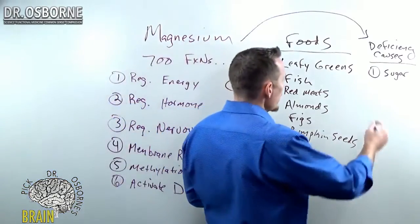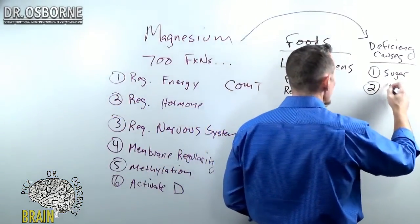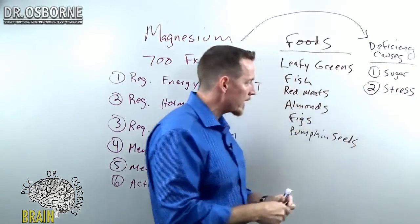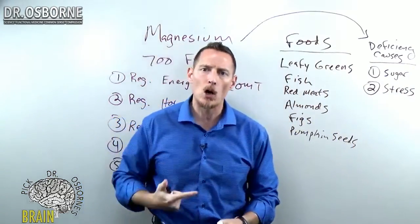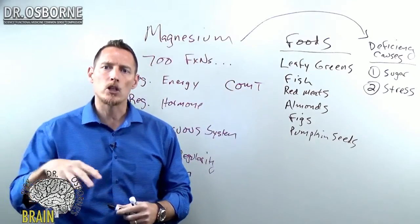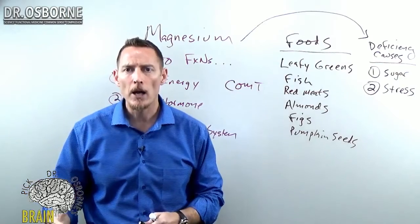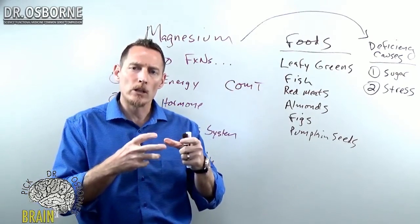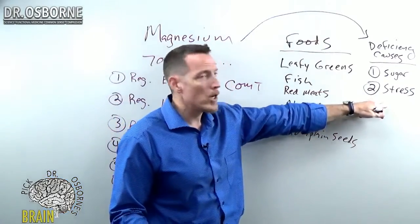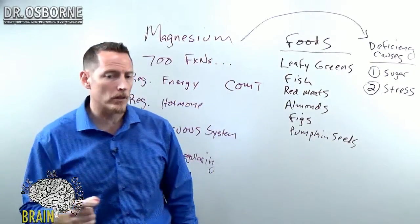The second cause is high stress. Stress depletes magnesium. Now, I'm not talking about acute stress where you have a bad day. I'm talking about chronic, prolonged stress. It's repetitive. It doesn't go away. Maybe you hate your job. Maybe you're in a bad relationship. Maybe you're taking a really stressful class in college. If that stress goes chronic, you're losing magnesium consistently.